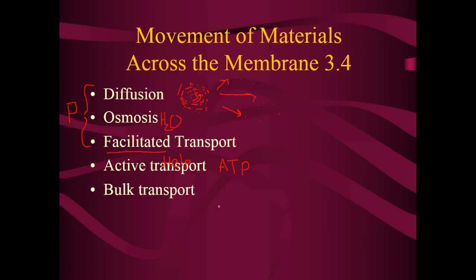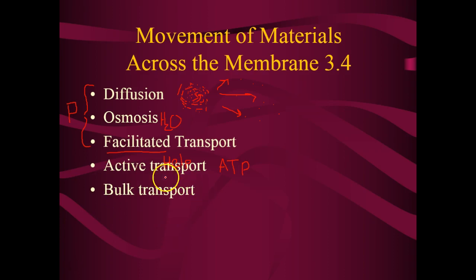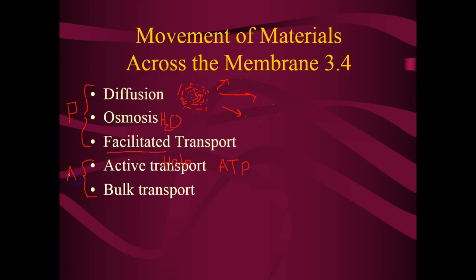Bulk transport is a process of moving large materials in and out of the cell. That will be the topic of lecture 9, the last lecture of chapter 7, next week. Bulk transport includes both endocytosis and exocytosis — moving large amounts of material. This requires energy as well. So endocytosis and exocytosis are both forms of active transport; they both require energy, while the three passive forms do not.